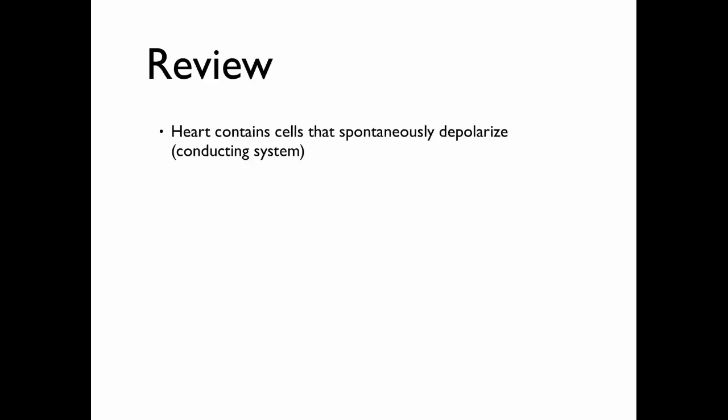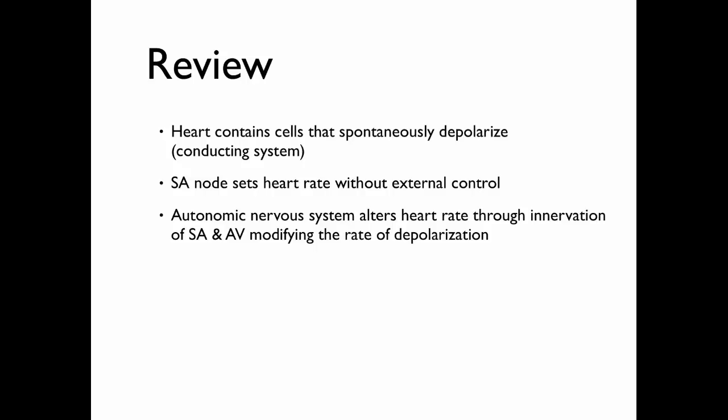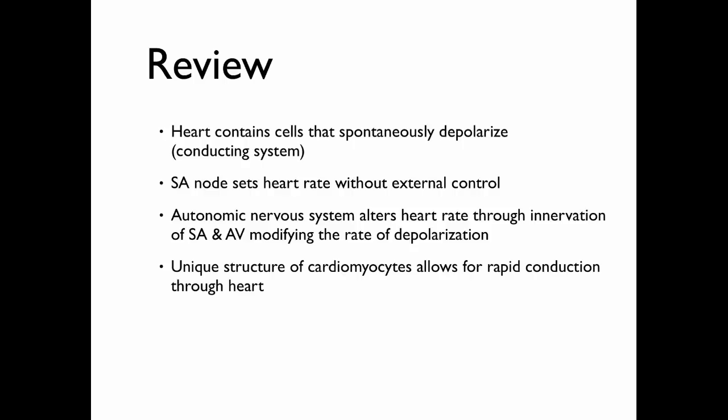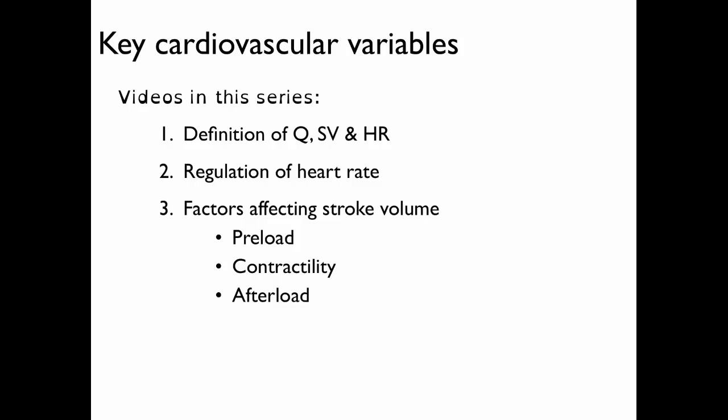To review the regulation of heart rate covered in this video: the heart contains cells that spontaneously depolarize — we call this the conducting system. The SA node sets the heart rate without external control. The autonomic nervous system can alter heart rate through innervation of the SA and AV node, modifying the rate of depolarization. Hormones can do this as well. There is also a very unique structure of cardiomyocytes which allows for very rapid conduction of action potentials through the heart. In the next set of videos I'll be discussing factors that affect stroke volume. Thank you.